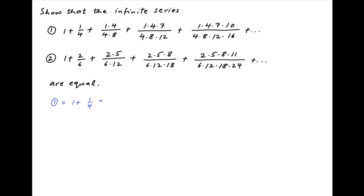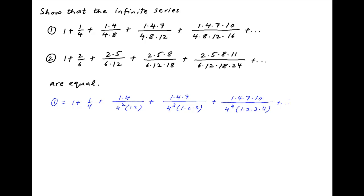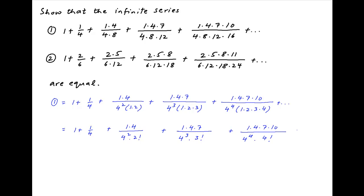The first series in the problem statement can be written as 1 plus 1 upon 4 plus 1 times 4 divided by 4 squared times 1 times 2, plus 1 times 4 times 7 divided by 4 cubed times 1 times 2 times 3, plus 1 times 4 times 7 times 10 divided by 4 to the power 4 times 4 factorial, plus and so on.